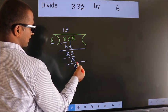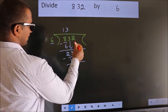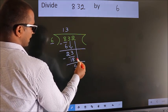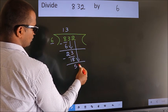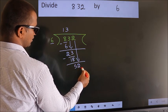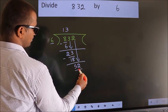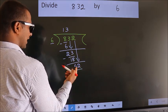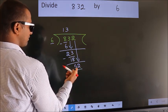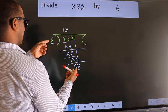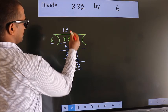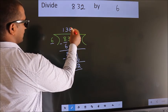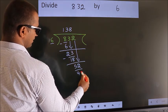After this, bring down the beside number. So, 2 down. So we have 52. A number close to 52 in the 6 table is 6 eights 48.